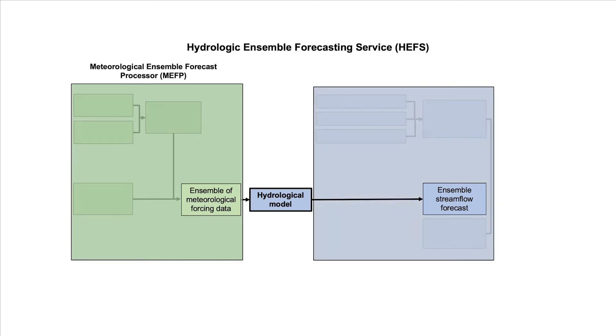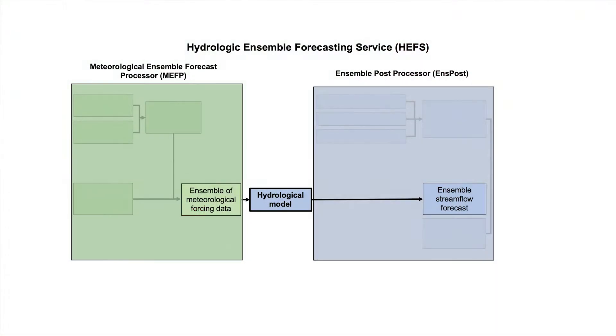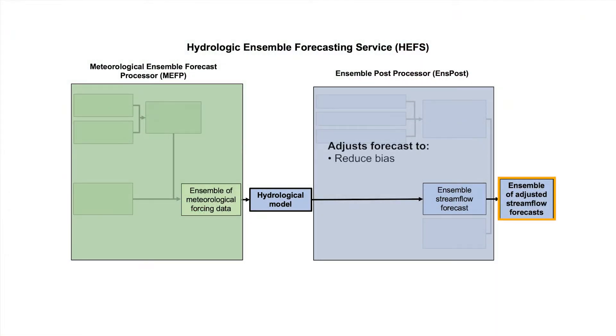HEFS uses a component called the Ensemble Post Processor, or ONSPOST. The ONSPOST adjusts an ensemble of streamflow forecasts to account for the hydrological modeling uncertainties and to correct for biases that are caused by the hydrological modeling. The end product is an ensemble of adjusted streamflow forecasts that are less biased and properly account for the uncertainties in the hydrological modeling.